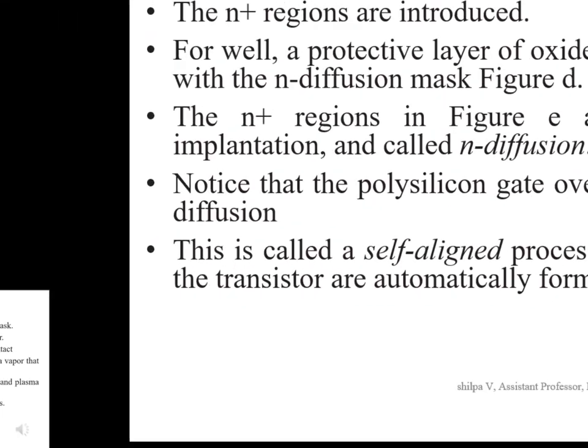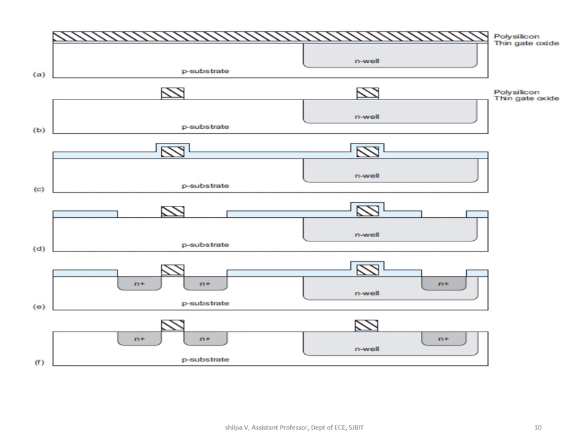After creating the n-well, the next step is to form polysilicon and diffusion regions. The transistor gates consist of polycrystalline silicon, called polysilicon, over a thin oxide layer. Thin oxide is grown in a furnace, then the wafer is placed in a reactor with silane gas (SiH4) and heated to grow the polysilicon layer. The polysilicon is heavily doped to form a reasonably good conductor.